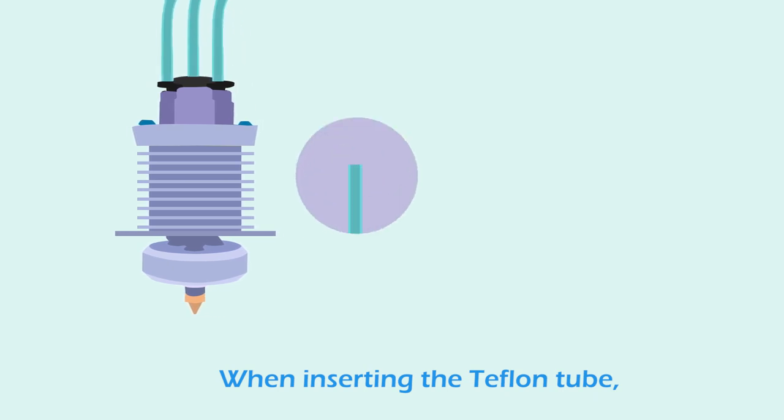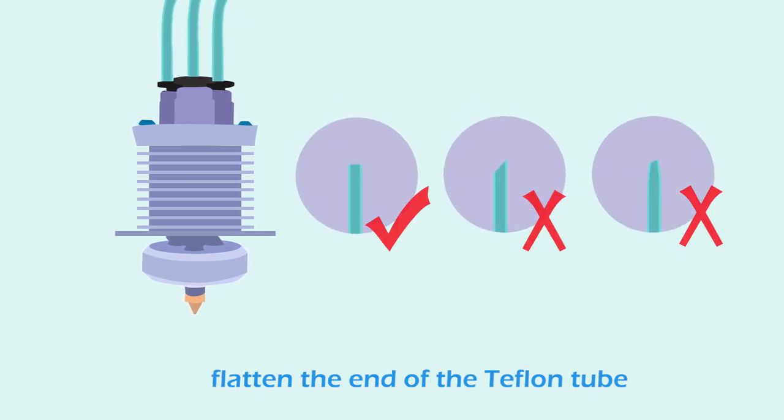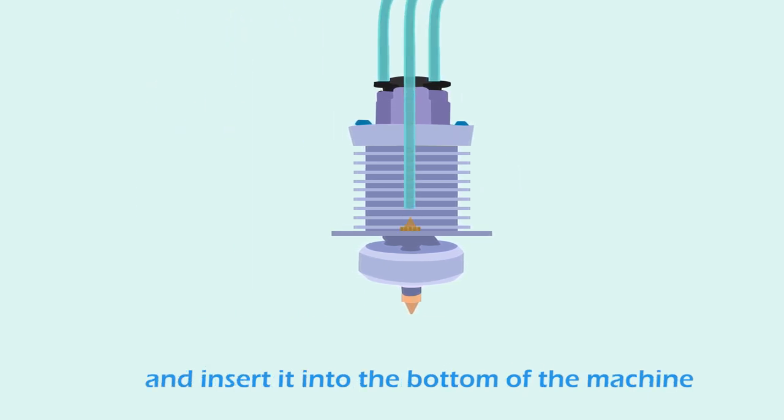When inserting the Teflon tube, flatten the end of the Teflon tube and insert it into the bottom of the machine.